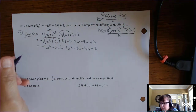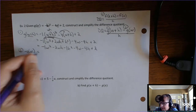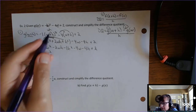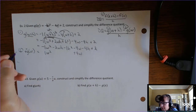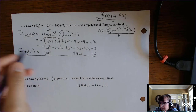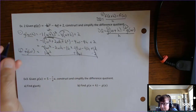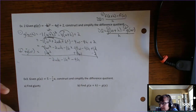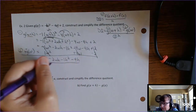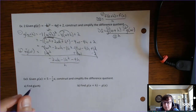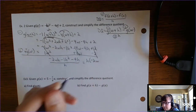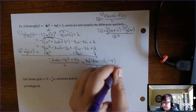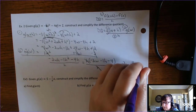Step 2: subtract g of w by adding its opposite. The opposite of negative w squared is positive w squared; the opposite of negative 4w is positive 4w; the opposite of positive 2 is negative 2. Those terms cancel with the corresponding terms from g of w plus h. You're left with negative 2wh minus h squared minus 4h. Then step 3: factor out h to get h times negative 2w minus h minus 4, divided by h, giving a difference quotient of negative 2w minus h minus 4.